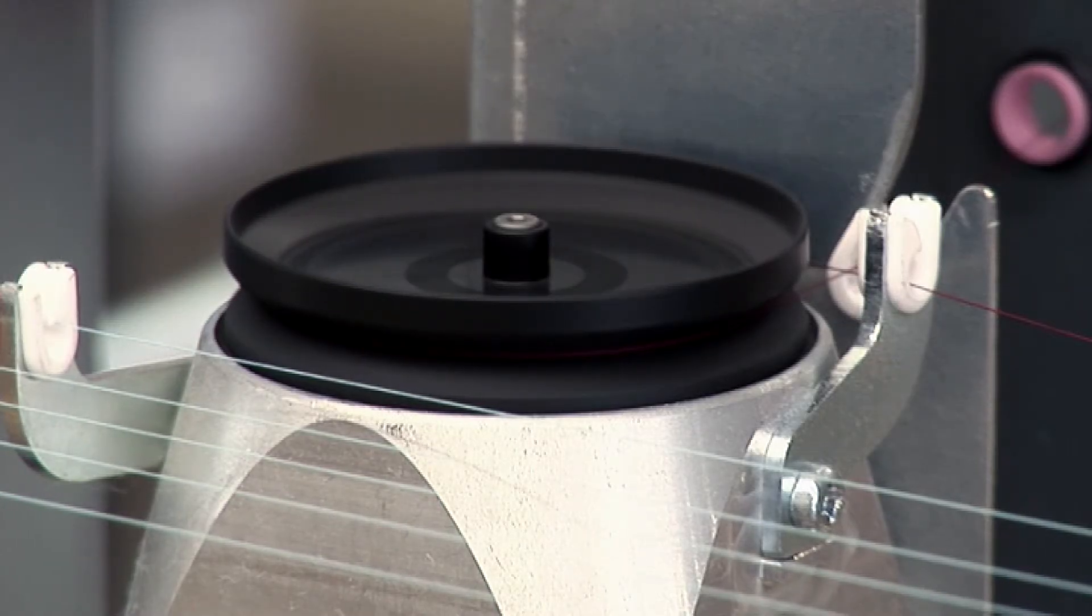The universal tensioning unit can be used in a yarn tensioning range of 3 to 250 centi-newtons.